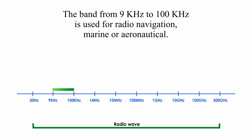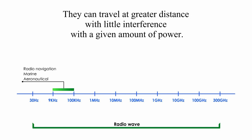The band from 9 kHz to 100 kHz is used for radio navigation, marine or aeronautical. They can travel at greater distance with little interference with a given amount of power.